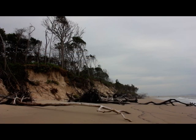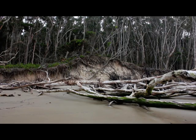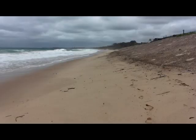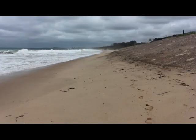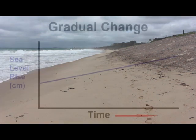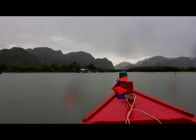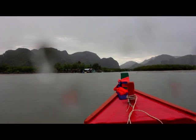Sometimes an extreme natural event such as a tsunami or a hurricane will suddenly cause a lot of erosion in a short period of time. These events are irregular but of short duration, and eventually regular rates of erosion and deposition will resume. Another temporal pattern is a gradual change over a long period of time — for example, rising sea levels due to long-term changes in climate.